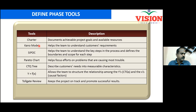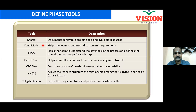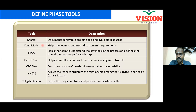The Kano model is a tool that helps you understand your customer's requirements better than the customer himself knows. Customers always have spoken and unspoken requirements — they speak about certain things and forget to mention many others. The Kano model helps you understand and prioritize both types of requirements.